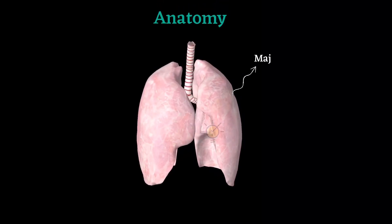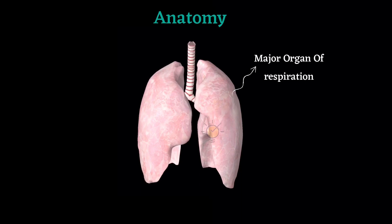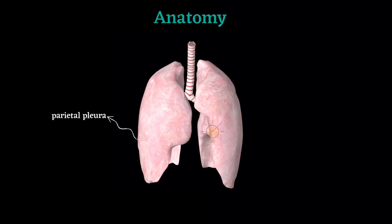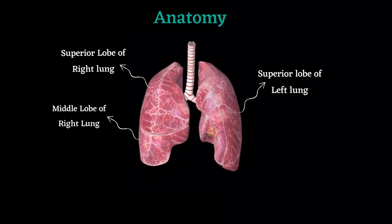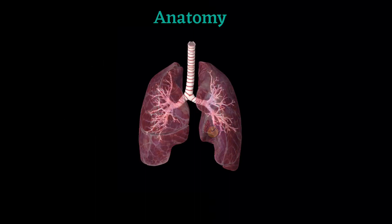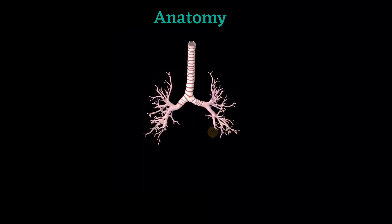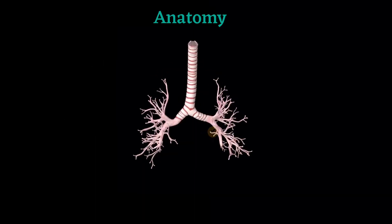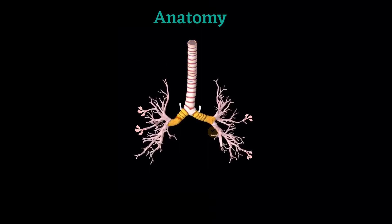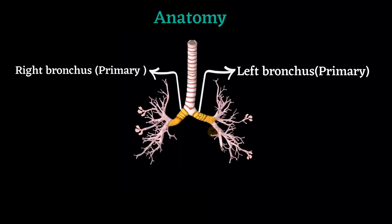The lungs are the major organs of respiration, located in the chest either side of the mediastinum. The bronchial tree, which is a series of passages that supplies air to the alveoli of the lungs, begins with the trachea, which divides into a left and right bronchus. Each bronchus enters the root of the lung, passing through the hilum.